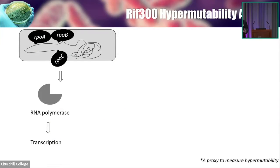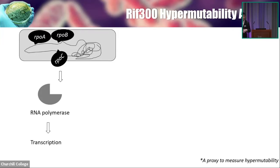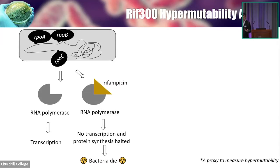How can I actually assay the hypermutability and measure mutation frequency? We have a very good proxy to measure mutant frequency, which is by using rifampicin. Rifampicin targets the RNA polymerase, which is encoded by rpoA, B, or C in the bacteria genome. In the normal case, rpoA, B, or C produce normal RNA polymerase, they can do transcription, and in the presence of rifampicin it will bind to it, then no transcription, no protein synthesis, and the bacteria will die.